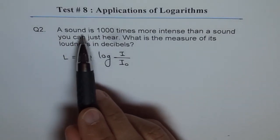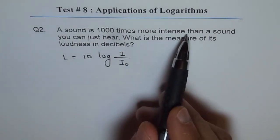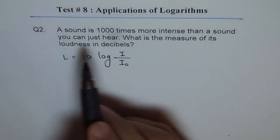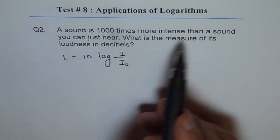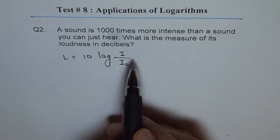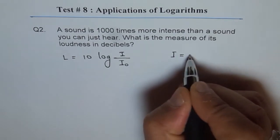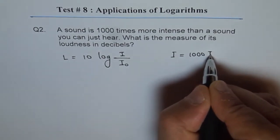When we say a sound is thousand times more intense, that means I is thousand times more intense than a sound you can just hear. You can just hear a sound level or intensity of I₀. So that statement says that I equals thousand times I₀.